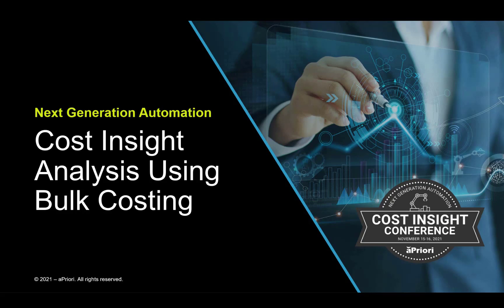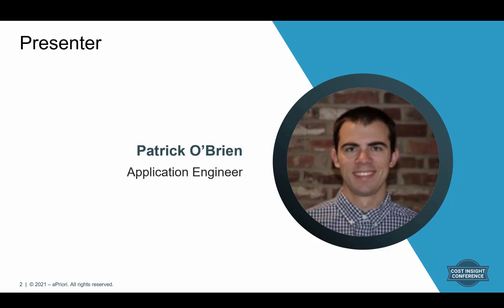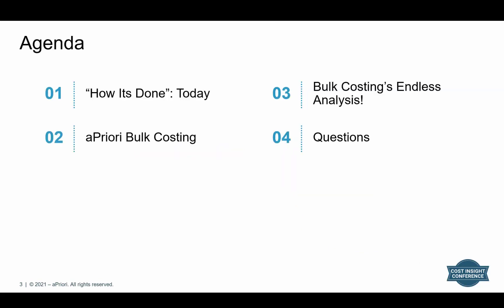We have also uploaded a PDF of today's presentation, which you can access in the Files panel. In this session's agenda, we'll be covering how it's done today — the tools that sourcing teams use to identify where components should be sourced or which components they're overpaying for; from an engineering perspective, which components are challenging to manufacture; and for VAVE teams, where the most cost reduction opportunities exist. We'll then look at how aPriori's bulk costing tool works and wrap up with questions.